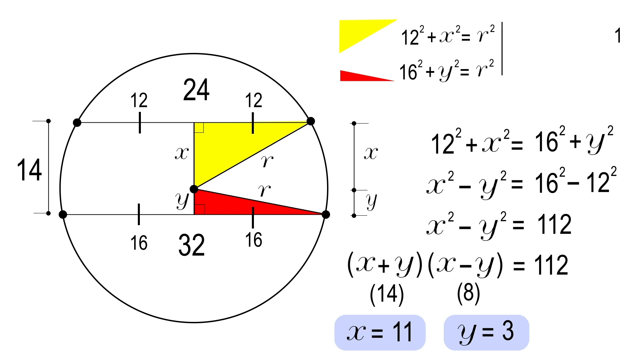From this, applying again Pythagoras theorem, we find radius as square root of 265. And this is the solution.